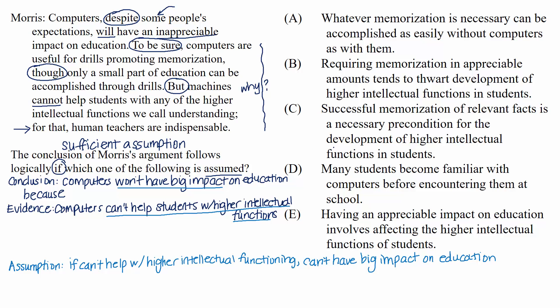Let's go through each choice one by one. A: Whatever memorization is necessary can be accomplished as easily without computers as with them. This choice doesn't connect the gap in the argument. The part of the argument dealing with memorization isn't even part of the main argument — it's just a side note, a concession about one thing computers are good for. We need to connect the ideas of higher intellectual functions and having an impact on education. B: Requiring memorization in appreciable amounts tends to thwart development of higher intellectual functions in students. This is like A, in that it focuses on requiring memorization, but we don't care about memorization. We could seriously cut that entire sentence about memorization from the passage and it wouldn't change the argument's main structure. So this choice is irrelevant.